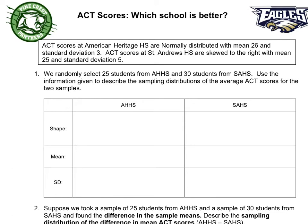The first item we're going to check is shape. We have a couple of different ways that we can decide that a sampling distribution is going to be approximately normal. In the setup, we hear that the ACT scores at American Heritage High School are normally distributed, so we know the shape of the sampling distribution will also be approximately normal.